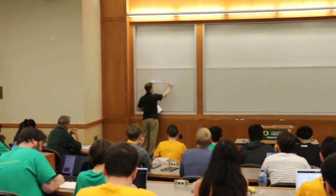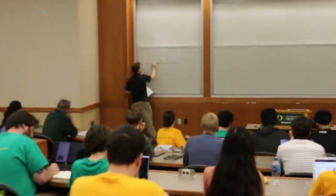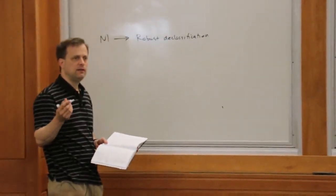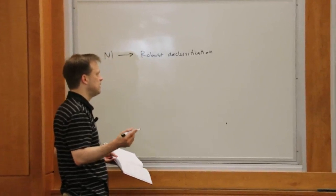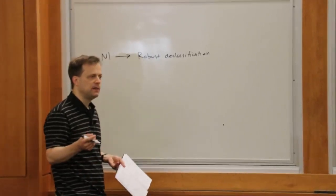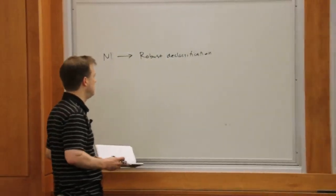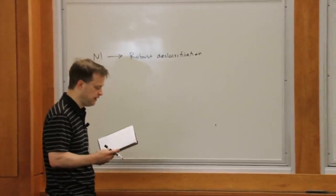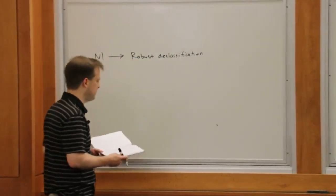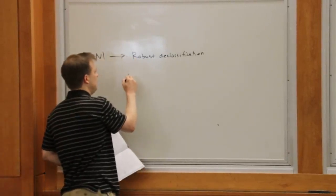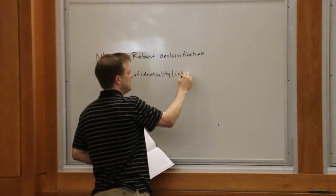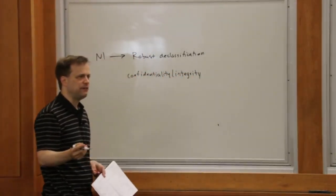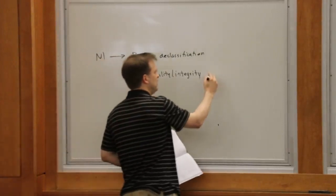This was an idea that essentially generalizes non-interference and gives us the ability to talk about adversary influence on the declassifications that happen. This is a very useful thing that the JIT implementation supports, and when you turn on the flag that checks it, you get a whole new set of security warnings to worry about. The thing that for a long time bothered me was that there was this really nice confidentiality and integrity duality that Viva identified, and robust declassification breaks that duality.